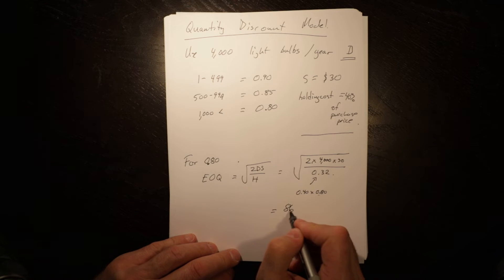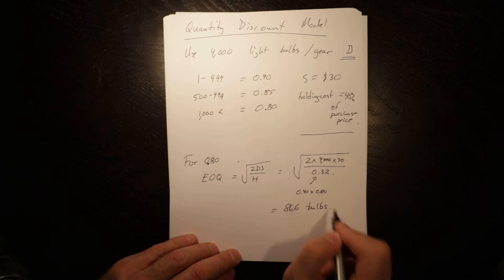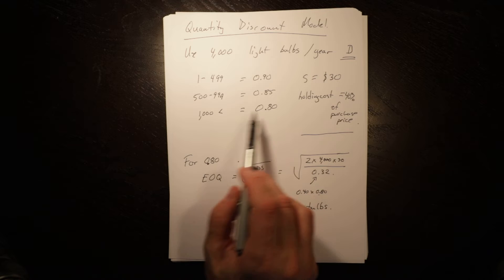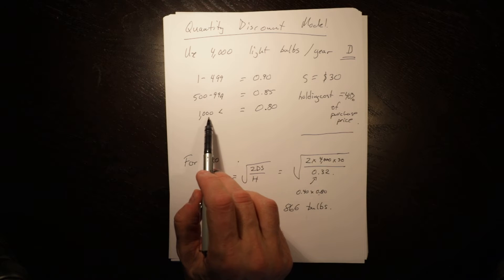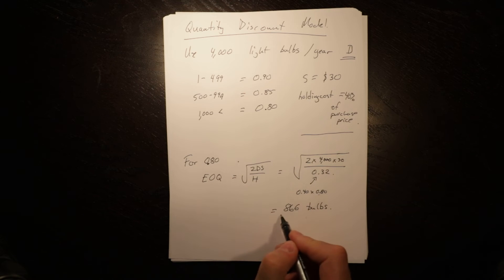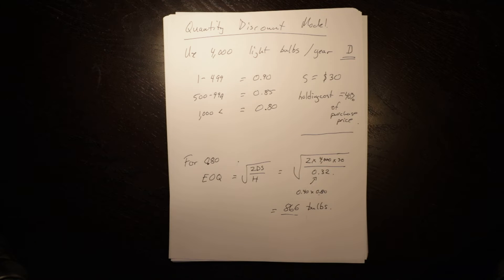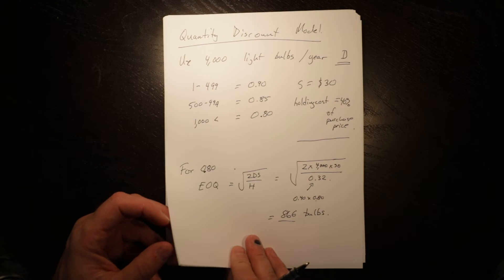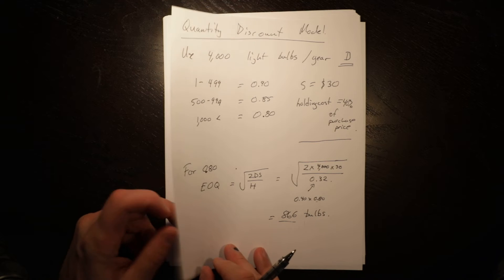0.32 equals 0.4, the holding cost, times 0.80, the acquisition price, and we get 866 bulbs. What you notice is to get the price of 80 cents we need to order at least 1,000, and the EOQ quantity is below 1,000, so that complicates our life a little bit.